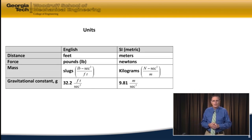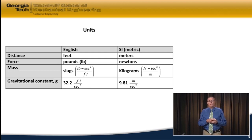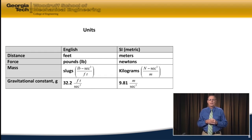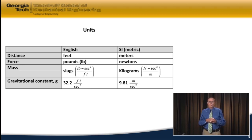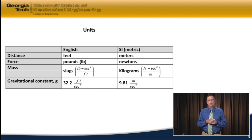Now that you've answered that question, let's look at the correct response. For distance, in English units we typically use feet or perhaps inches; in the metric system we use meters. For force, we use pounds in the English system and newtons in the SI system of units. Mass is kilograms in the SI system of units, and in the English system mass is pounds times second squared per foot, which is also referred to as slugs. Finally, the gravitational constant g is 32.2 feet per second squared in English units and 9.81 meters per second squared in SI.